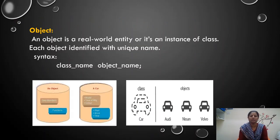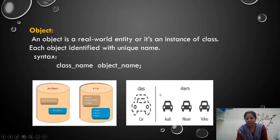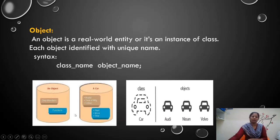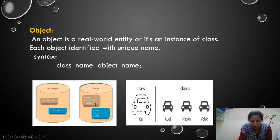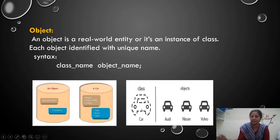Object is a real world entity. It is an instance of a class. Each object is identified with a unique name. See, for a car, many different cars are there — each car is identified with its company name. So the class gives a blueprint; using the blueprint, you can manufacture different models and different cars. A car contains data members like car model, year of manufacturing, color, and member functions called start, moving, and stop. These are common for all kinds of cars.